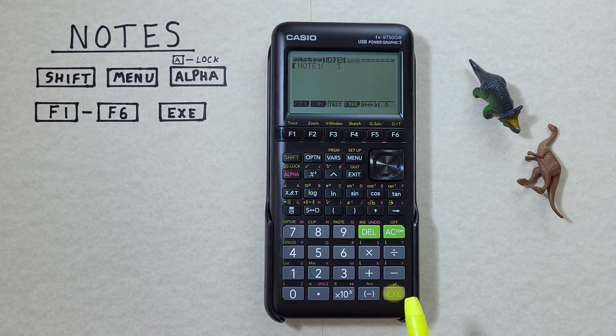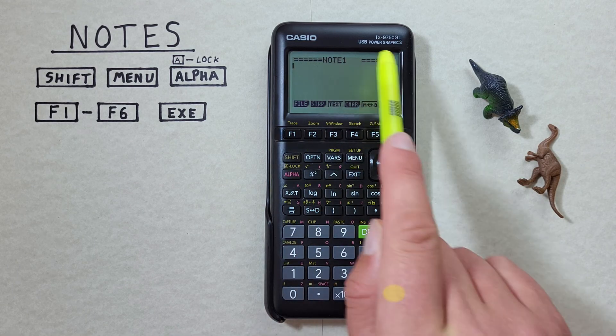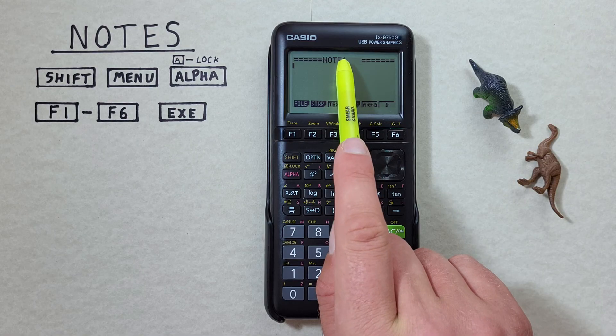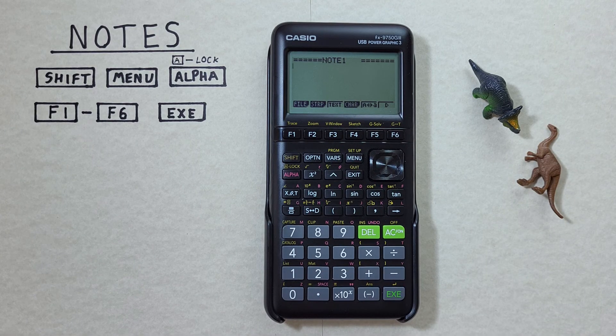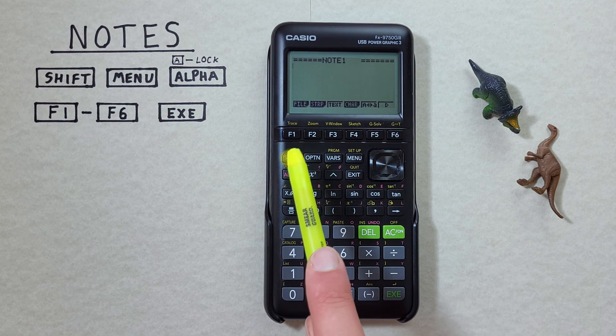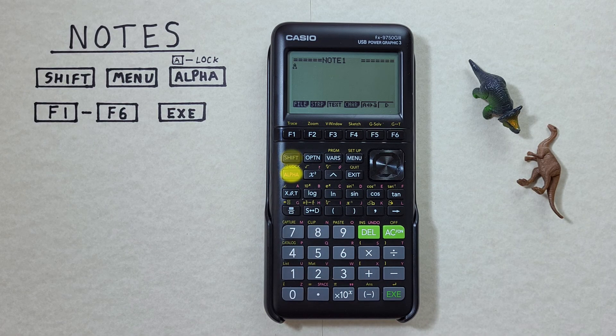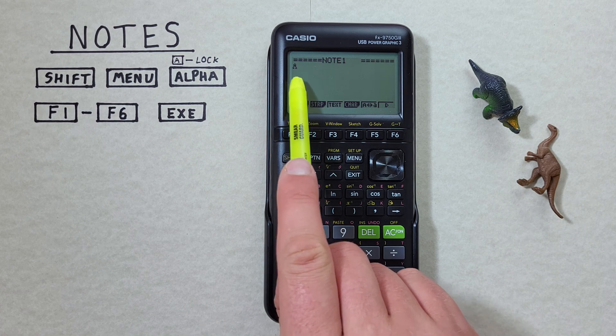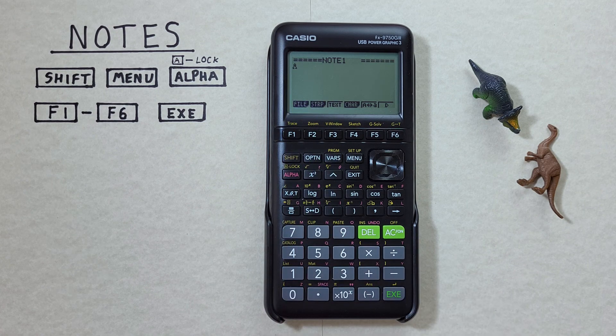Alright we've titled our note. If we hit EXE we go into the main body of the note here. You see our title at the top? We'll make this note a grocery list to remind us to pick up a few things on the way home. To start typing with letters we need to turn back on the alpha lock. So we press shift alpha and we see that A flashing again. Now we can go ahead and enter our notes.